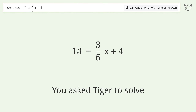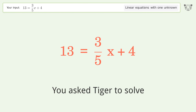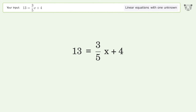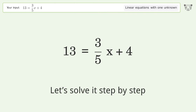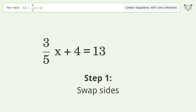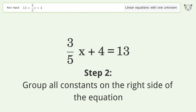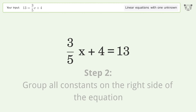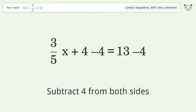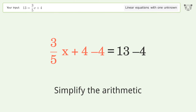Ask Tiger to solve this — it deals with linear equations with one unknown. The final result is x equals 15. Let's solve it step by step. Swap sides, group all constants on the right side of the equation, subtract 4 from both sides, and simplify the arithmetic.